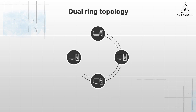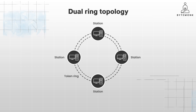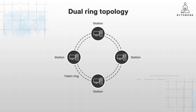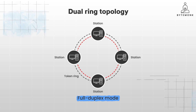In a dual ring topology, there is a second connection between the nodes in the ring, which enables data transfer in both directions. Data travels in a clockwise and counterclockwise direction and the network works in full-duplex mode. So if one ring fails, the other one can take over to avoid an interruption in data transmission.